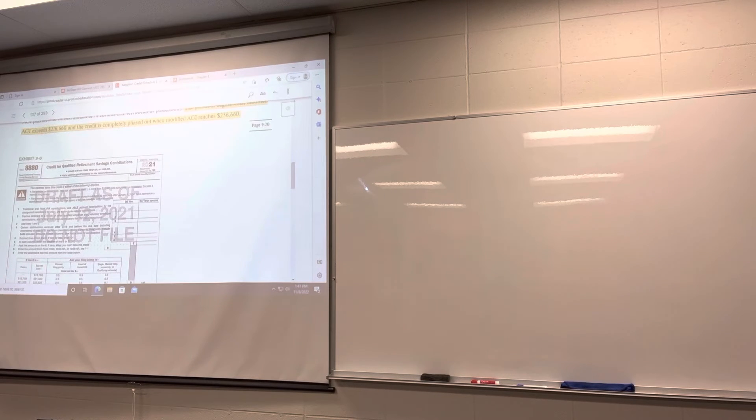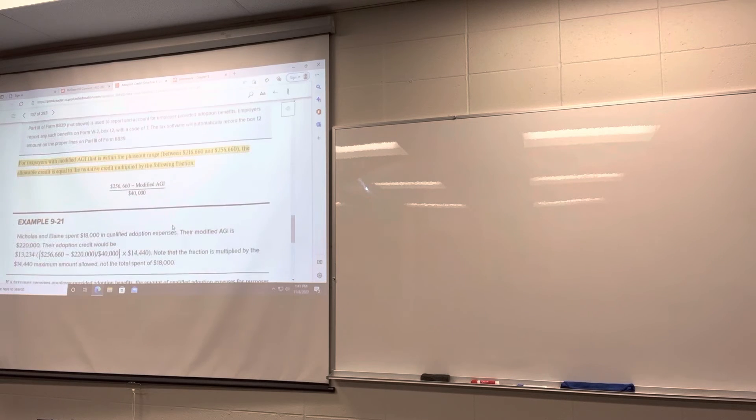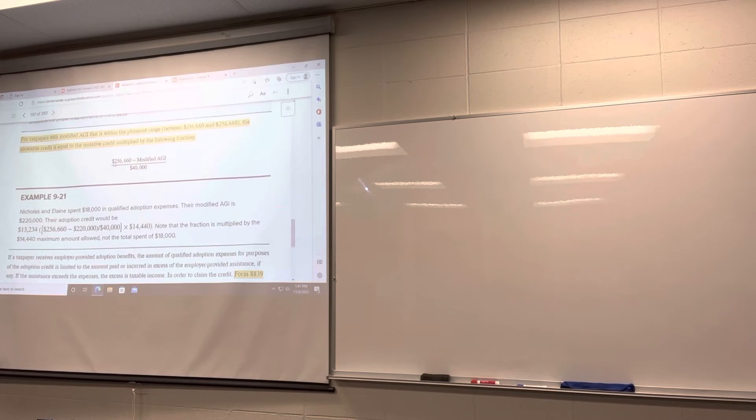The form, this chapter, they got the wrong form here. This is the saver's credit form. That's not the adoption credit. We'll have to look at the next section to see the adoption credit form. Here is the calculation for the phase out. So, $256,660, the upper limit, minus modified adjusted gross income, divided by $40,000. That $40,000 is the phase out range. You've seen this calculation before in all of our phase outs. That denominator is always going to be the phase out range, the difference between the top of the phase out range and the bottom of the phase out range.